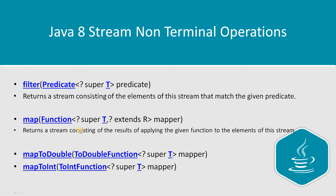Next is map. Map helps you apply some business logic, and you can also use it to convert data types — for example, passing an object and returning an integer or string value. Map returns a stream consisting of the results of applying a given function to the elements of the stream. Variants include mapToDouble and mapToInt.